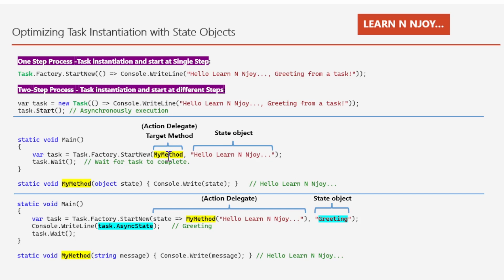Now let's talk about optimizing task instantiation using a state object. What exactly is a state object and how does it help us? Imagine you want to call a method directly instead of using a lambda expression — this is where the state object comes into play. Let's understand it with the help of the example shown here. In the main method, I instantiated and started a task using the startNew method.